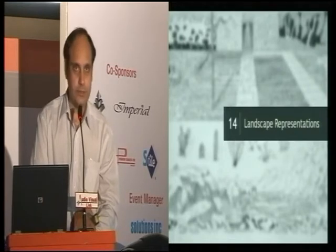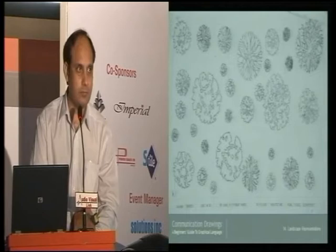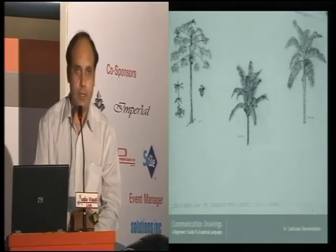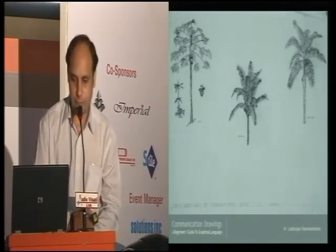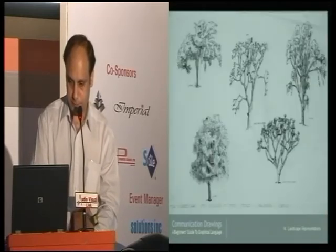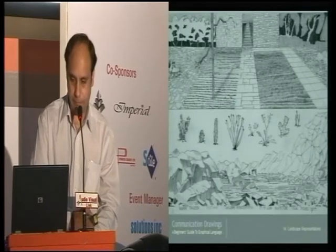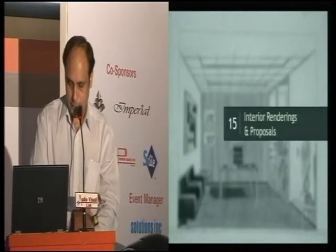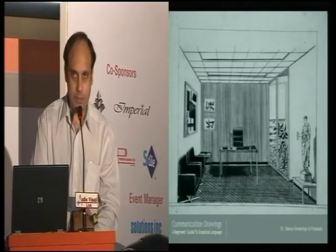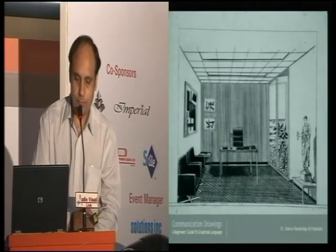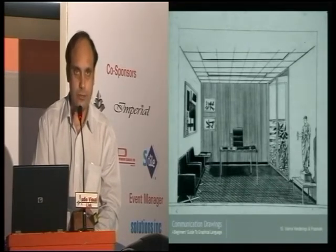Landscape representation is the next topic. Treetops are done from pen and ink. We identify 12 to 14 commonly found trees in Karachi, and students photograph and draw them. Interior renderings are also taken from pen and ink — students are given photostats from the book, with the photostat paper being A4 size, and they reproduce it on a larger scale.